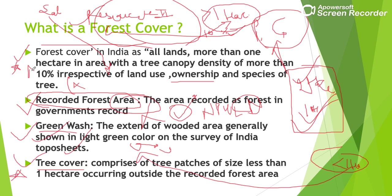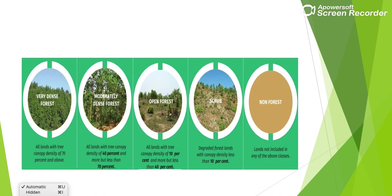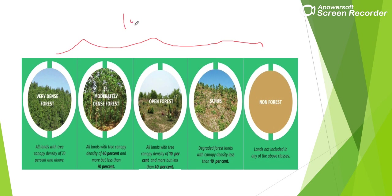So to summarize: greater than one hectare land with more than 10% canopy density is forest cover; less than one hectare land is tree cover. Forest cover is further classified by canopy density: more than 70% is Very Dense Forest — like tropical rainforests with around 95% canopy density. 40% to 70% is Moderately Dense Forest, 10% to 40% is Open Forest, and below 10% is Scrub.